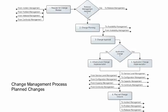The planned change process starts when the change coordinator reviews the details of a new change request to see if it qualifies for the change management process. If it does, the coordinator routes it through either the standard change or the non-standard change process, according to the organization's policies.